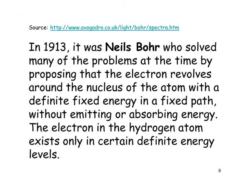In 1913, it was Niels Bohr, a Danish scientist, who solved many of the problems of the time by proposing that the electron revolves around the nucleus with a definite fixed energy in a fixed path, without emitting or absorbing energy. This is its normal ground state. The electron in the hydrogen atom exists only in certain definite energy levels, and this begins to explain the lines on the spectrum.